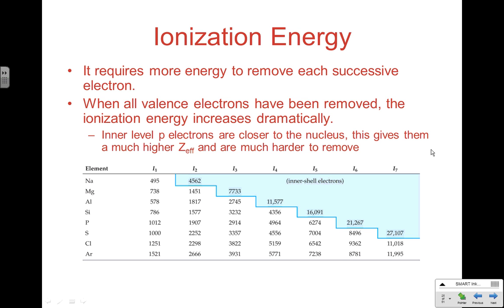The same thing is true with magnesium: when you go from the second to third ionization, there is a huge jump. So why do you see a huge jump in consecutive ionization energies every once in a while? If you have removed all of the valence electrons, you've now gone to the next higher energy level. Inner level P electrons are close to the nucleus, and this gives them a much higher effective nuclear strength — they're much harder to remove.